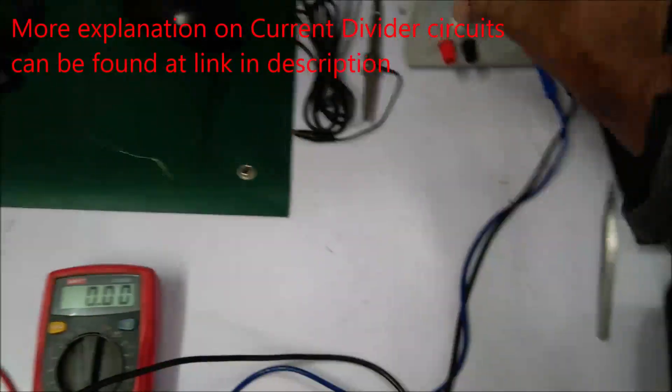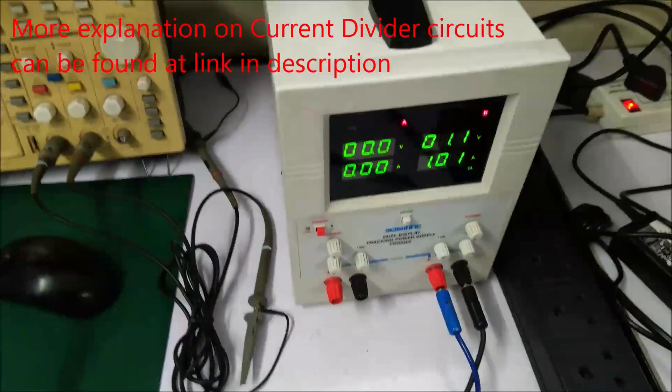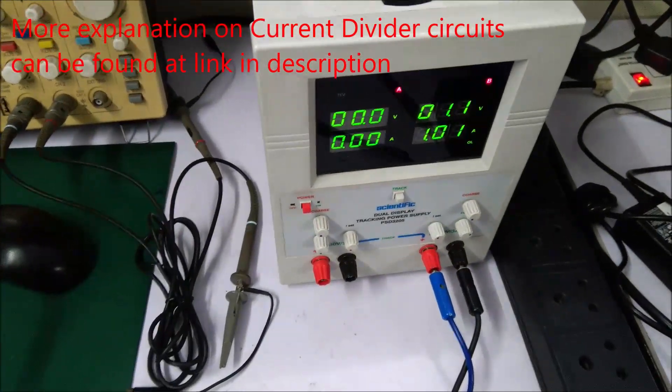So let's power up the bench power supply unit. As we can see, this is 1 volt and the current flowing through this resistor is 1 ampere.